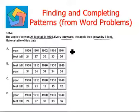So here we have year and we have feet tall. Now it says in 1900, the apple tree was 24 feet tall. Now after every 10 years in 1910, it grows by 3 feet, that means it has increased. So 24 plus 3, this becomes 27.